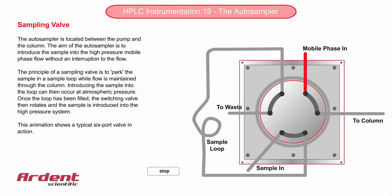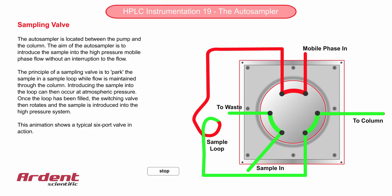Introducing the sample into a high-pressure flow path is quite a challenge. The technique that we use in HPLC is to first park the sample in a sample loop, as this can be carried out just at ambient pressure. After this, the flow is redirected through the valve, and the sample is transferred out of the loop and onto the column.